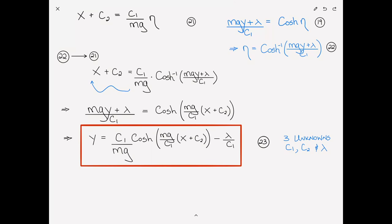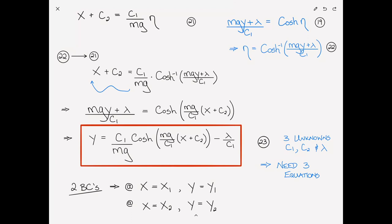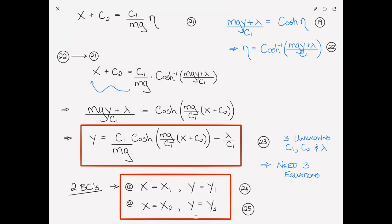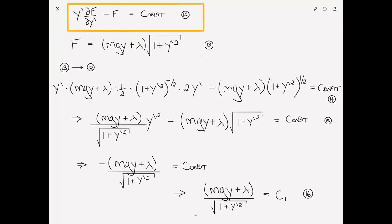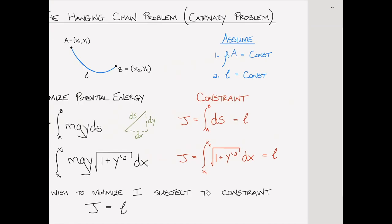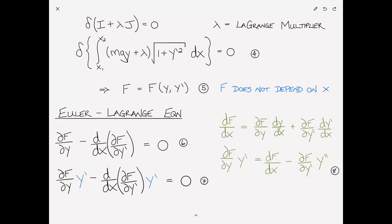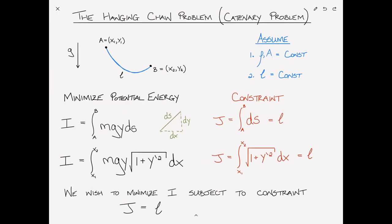Our first two conditions come from our boundary conditions: at x equals x1, y equals y1, and at x equals x2, y equals y2, since points A and B are known ahead of time. So we have two equations for three unknowns and need a third. That third equation comes from the constraint equation — we haven't actually enforced anything about the length L specifically yet. What we did as part of the Lagrange multiplier method was take lambda times J, but we didn't actually implement the length L.